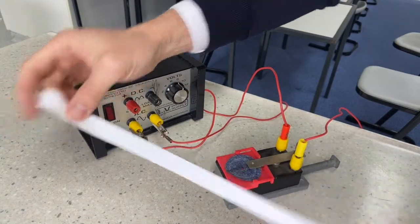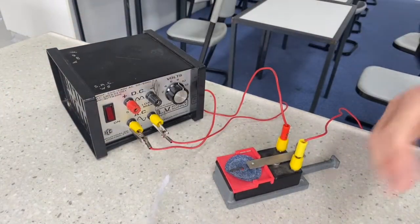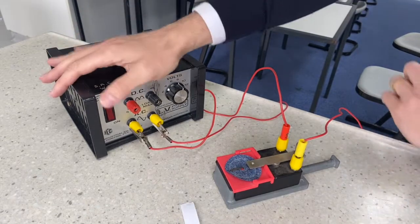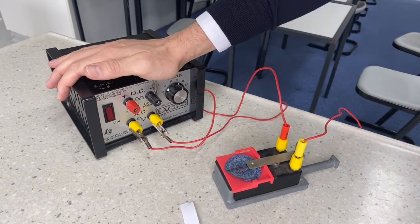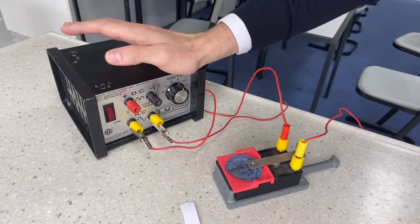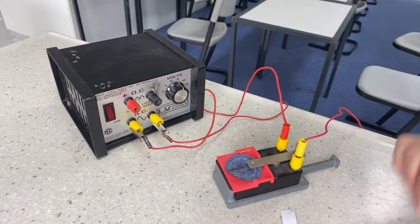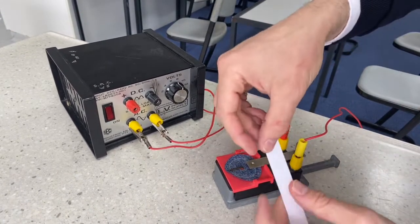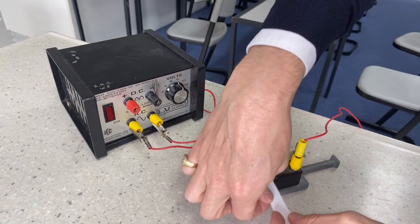You can see it's creating these little dots on here, 50 times a second. Obviously it's going to get very noisy here during the classroom when you've got a whole bunch of these going on, so what you really need to do is when you're not using it, turn your ticker timer off.